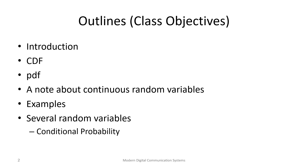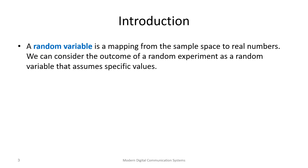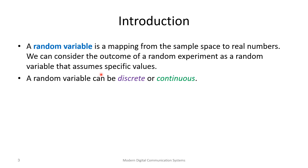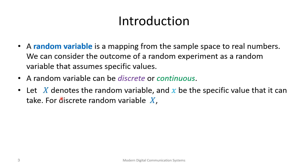A random variable is a mapping from the sample space to real numbers. We have an experiment, and the moment we assign numbers to the outcome we call it a random variable. Instead of saying head and tail we can say it's zero or one as an outcome, so we can consider the outcome of the random experiment as a random variable if we are giving the outputs specific numbers. Random variables could be discrete or continuous; in this course we will need both.